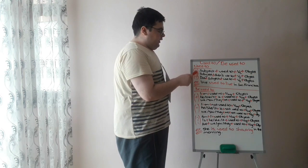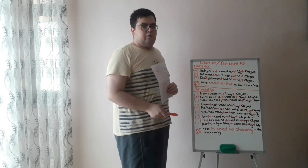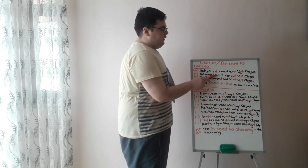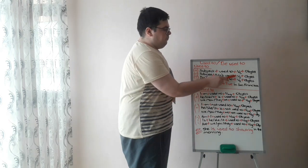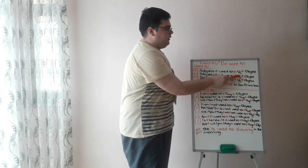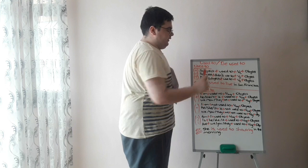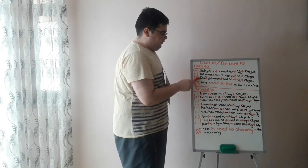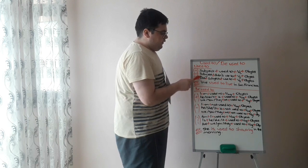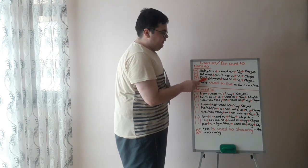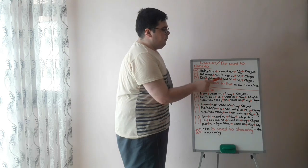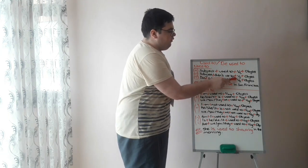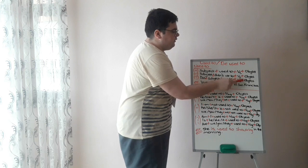If you want to create a negative sentence using used to, first we will put subject plus didn't used to, plus verb one, plus object. If you want to create a question sentence using used to, first we will put did plus subject, plus used to, plus verb one, plus an object.